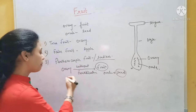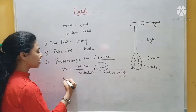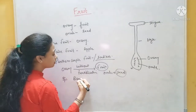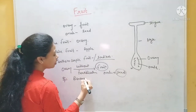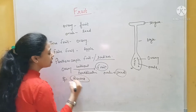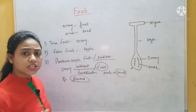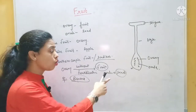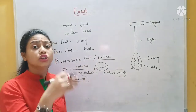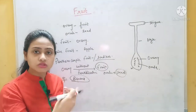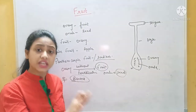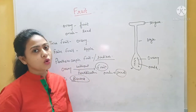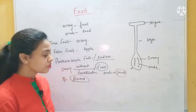What about banana? In the banana, you will not see the seed. You will see a black dot — that is the ovule, which is not fully converted into a seed. That shows the presence of ovule.